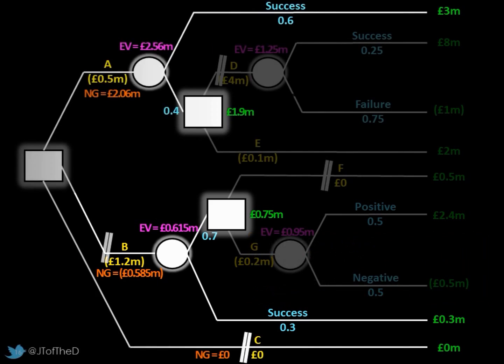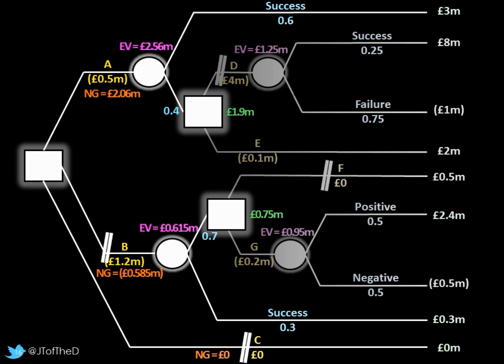Finally C - as I said, there's no net gain there, there's no cost, there's no income. We now have three options which dictates option A being the most beneficial. A has a net gain of 2.06 million pounds, B has a net loss of 585,000, and C clearly has no net gain at all - it's the status quo.